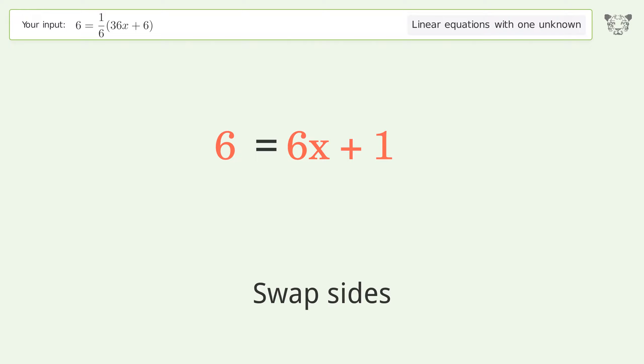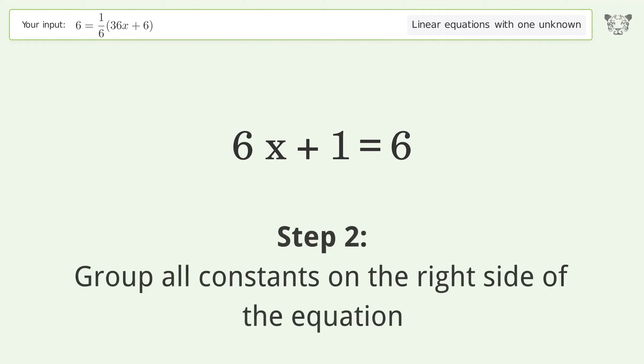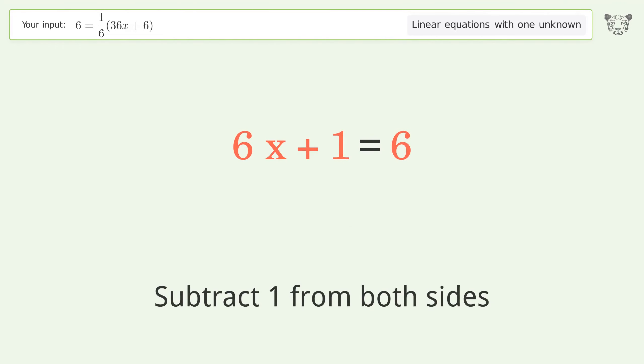Swap sides. Group all constants on the right side of the equation. Subtract 1 from both sides.